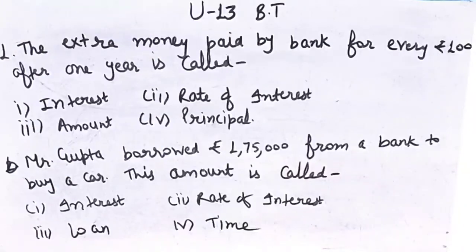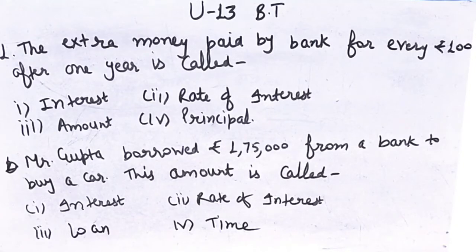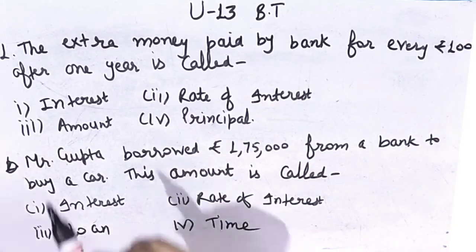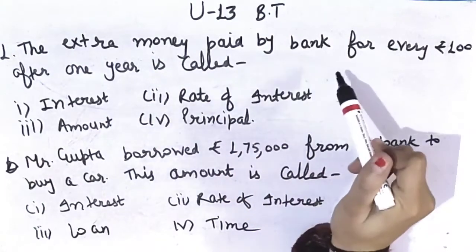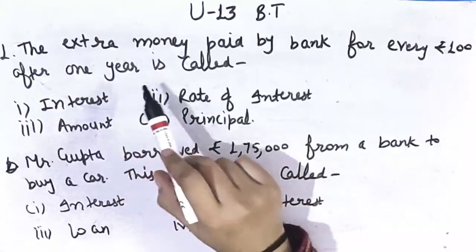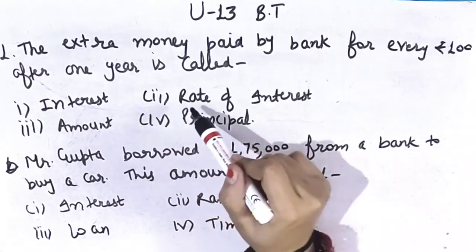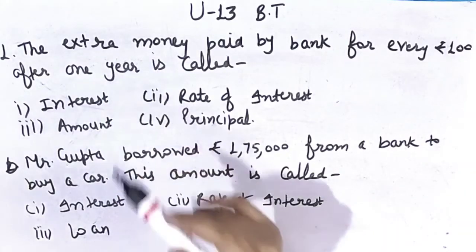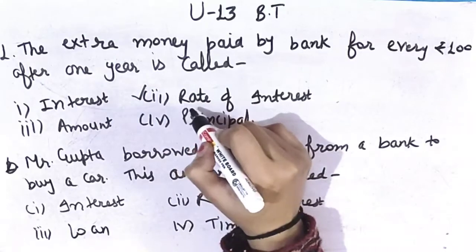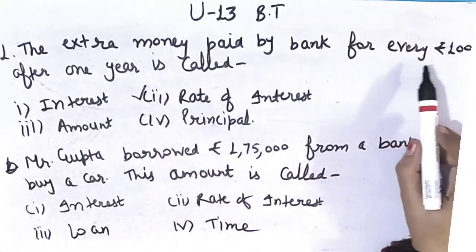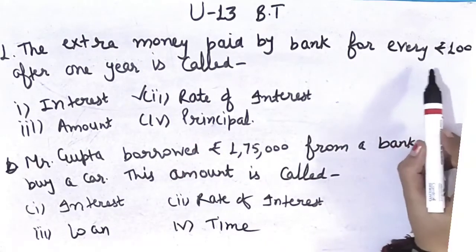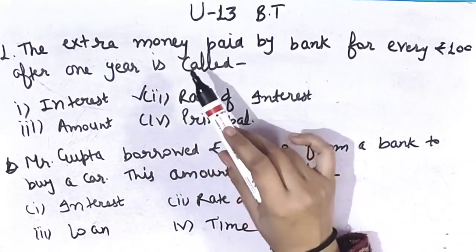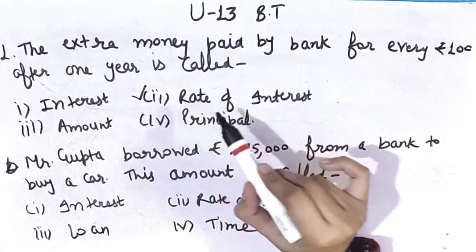Good morning students, how are you all? I hope you all are fit and fine and doing maths work regularly. Today we will do the brain teaser of Unit 13. The first question: the extra money paid by bank for every rupees 100 after one year is called — interest, rate of interest, amount, or principal? Extra money bank pays for every hundred rupees — it will be rate of interest.